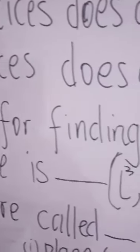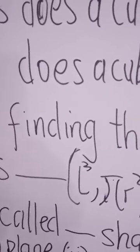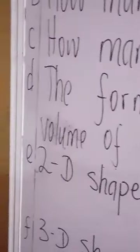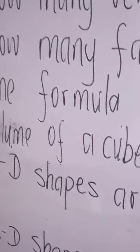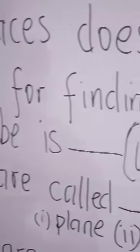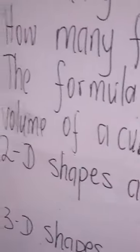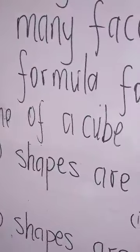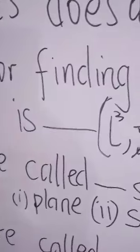The formula for finding the volume of the cube is ___. Options: length cubed, radius squared, or length squared. E: These shapes, or two-dimensional shapes, are called ___ shapes. Options: plane shapes, solid shapes.